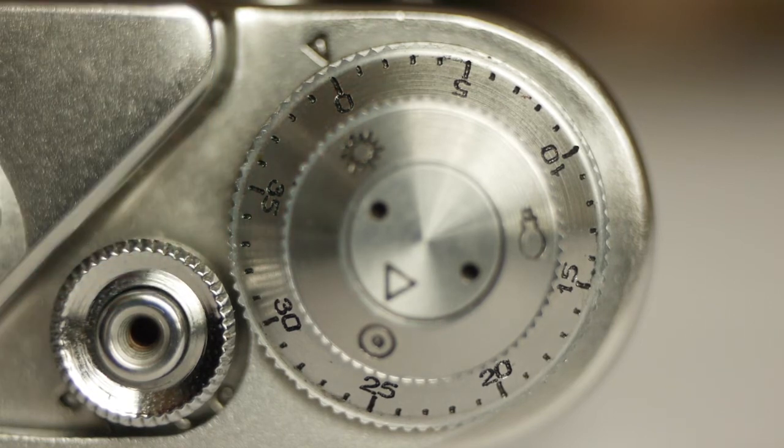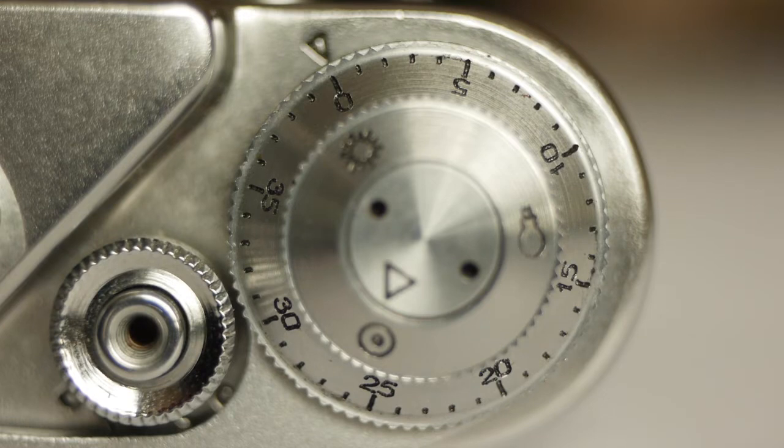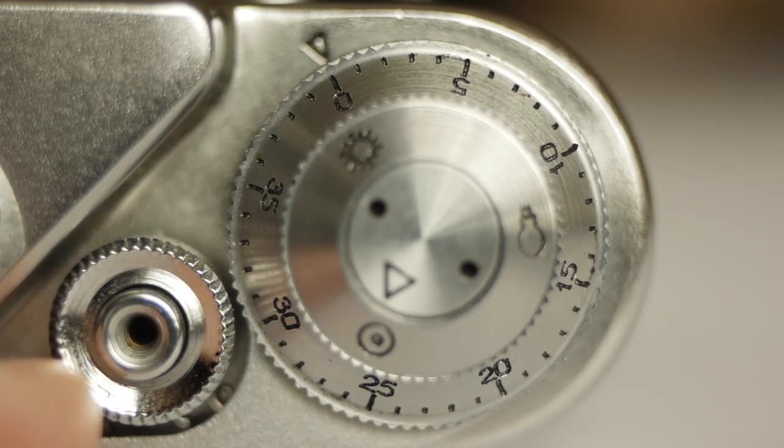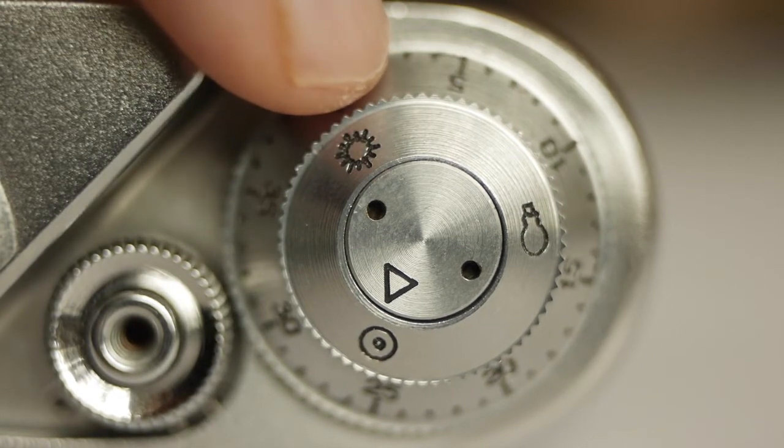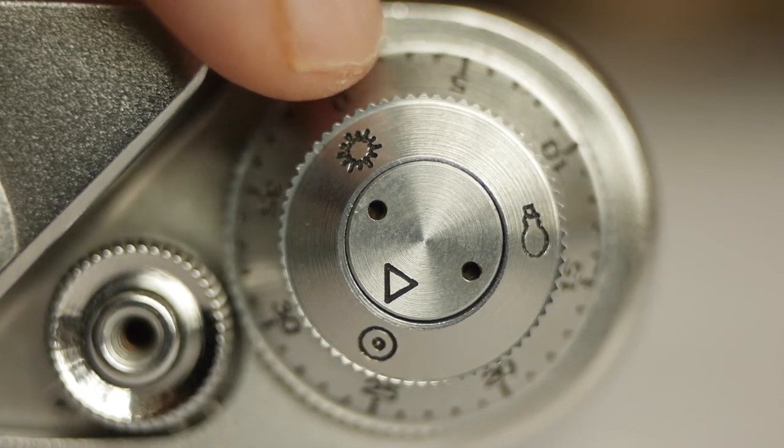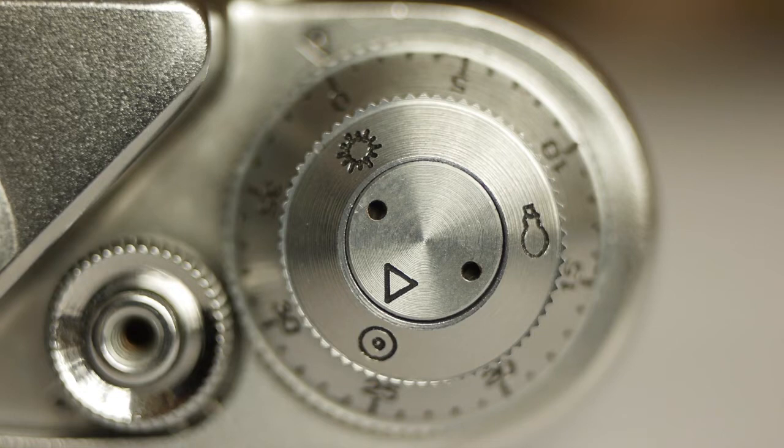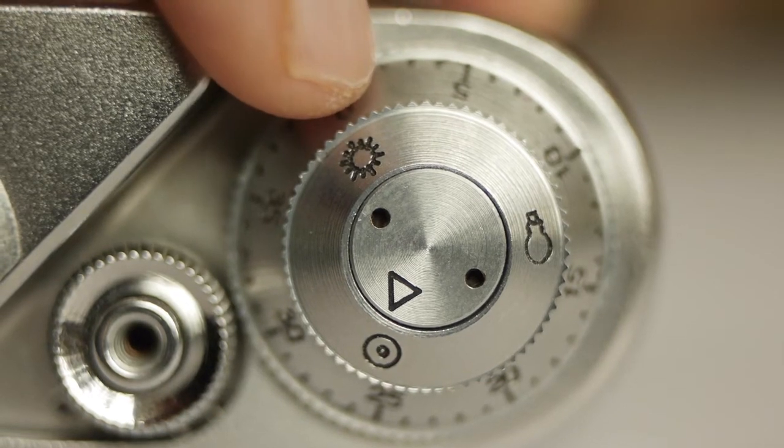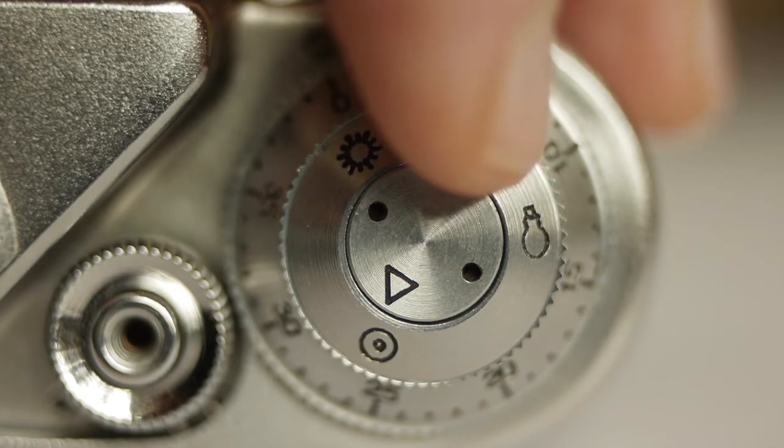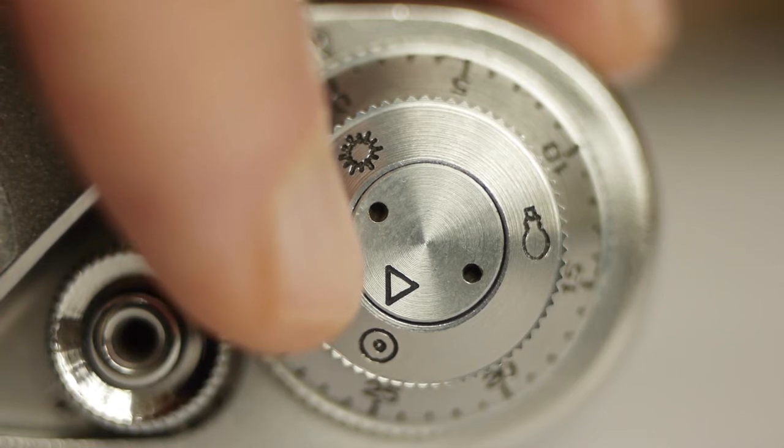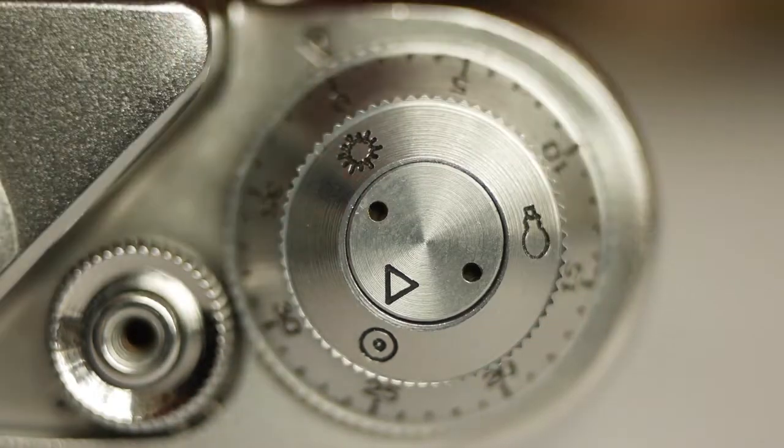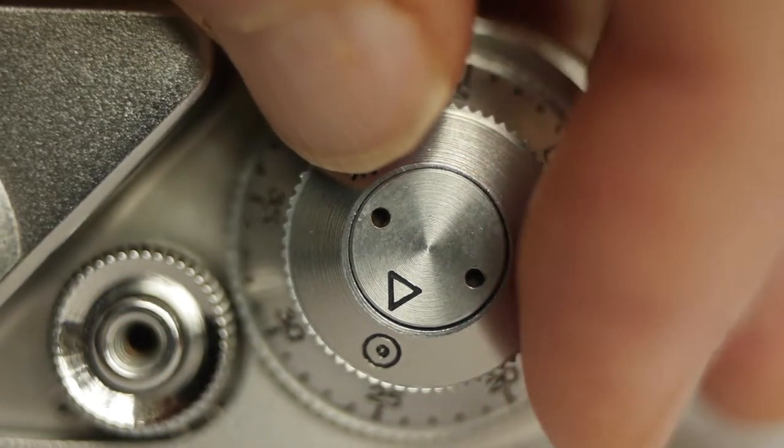The shutter release is here, just where you'd expect to find it, and it's threaded for use with a remote cable. Around the outside of the shutter release is this rather nicely chrome-plated control to disengage the film before you rewind it. The film type reminder is on the inner part of the dial here, and it's just that—a reminder. It doesn't actually do anything, it just reminds you what kind of film you've got loaded. We've got daylight film, artificial light film, and another mark here. I'm not entirely sure what this does, but it's perhaps for infrared film.